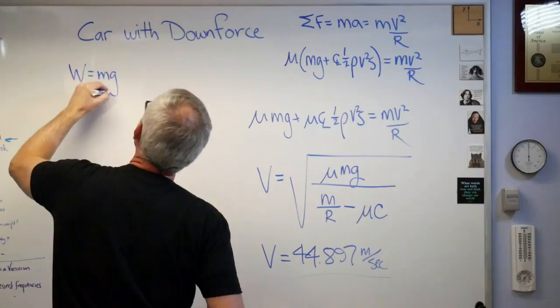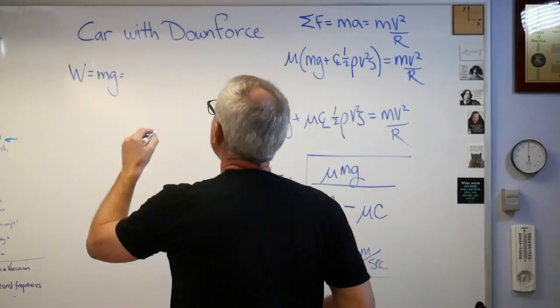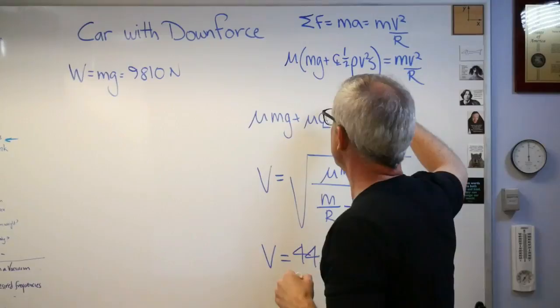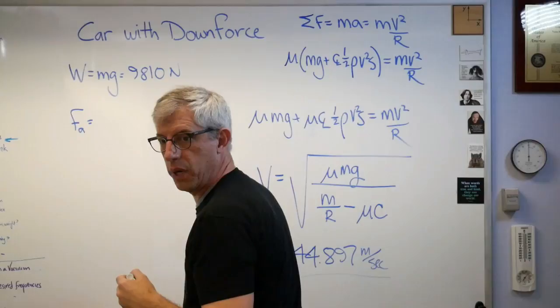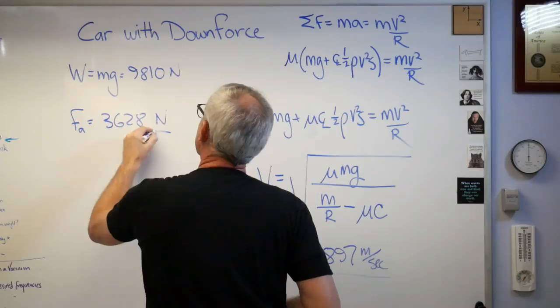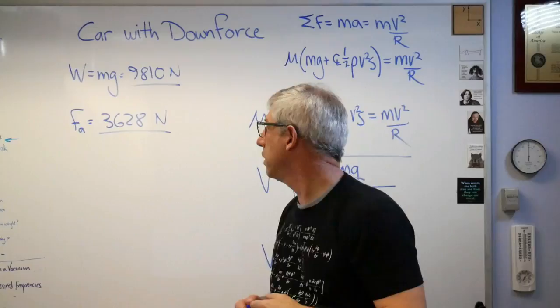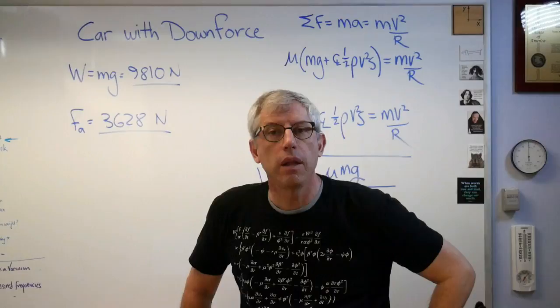The weight of the car is MG, and that is, let's see, 9810 newtons. Thousand kilograms times 9.81. Well, what's the aerodynamic downforce? Well, if you work it out, CL one-half rho V squared S, you get 3628. That means the aerodynamic downforce is about a third the weight of the car. Well, that's definitely enough to make a difference.